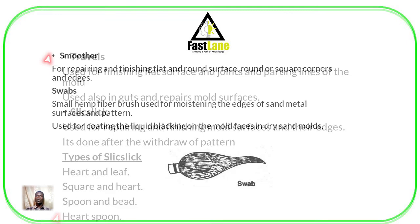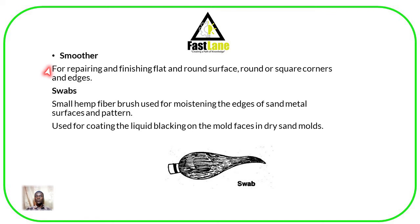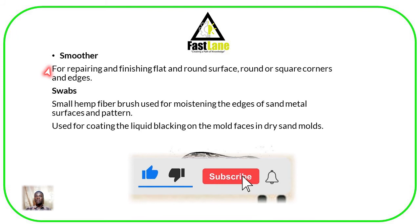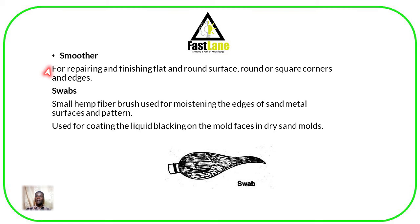Then we have a smoother, which is used for repairing and finishing flat and round surfaces — these may be round, square, corners, or edges. Then we have swabs, which are usually a small hemp fiber or brush. Swabs can be used for moistening the edges of sand, metal surfaces, and the pattern. They can also be used for coating liquid blacking on mold faces in dry sand molds.